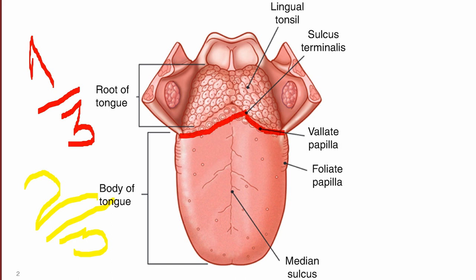The reason we divide the adult tongue into anterior and posterior portions is that there are different sets of innervation on these two aspects of the tongue, so these two regions differ developmentally and in innervation aspects as well. That's why anatomically the adult tongue has been divided into anterior two-thirds and posterior one-third.